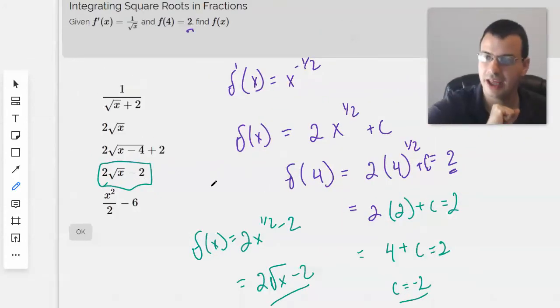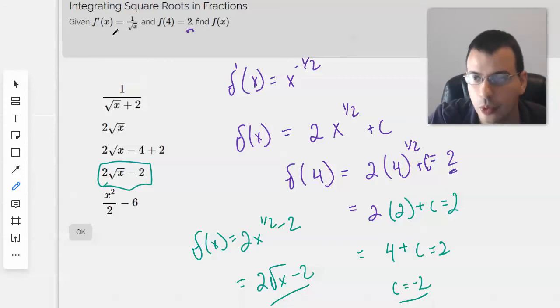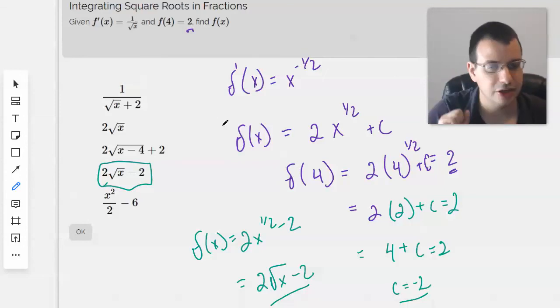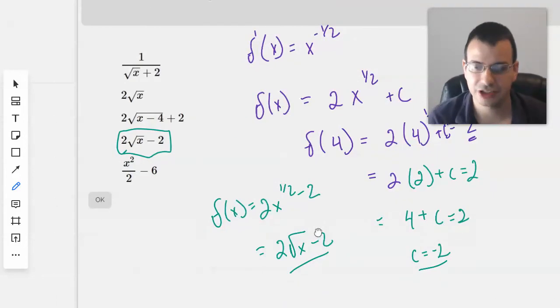So we're given a derivative and it kind of follows the power rule. So we take the integral of the derivative. It gives us f of x and a constant c. We then plug in our initial condition to find out what that constant c is. And that gives us our answer for f of x. Not too bad.